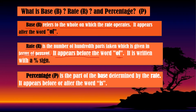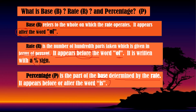Remember: rate appears before the word 'of,' and it is written with a percent sign. You have to remember that the rate appears before the word 'of' and has a percent sign. Now, for percentage, or P, it is a part of the base determined by the rate. It appears before or after the word 'is.' Remember that — it appears before or after the word 'is.'